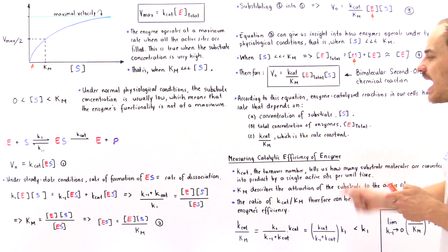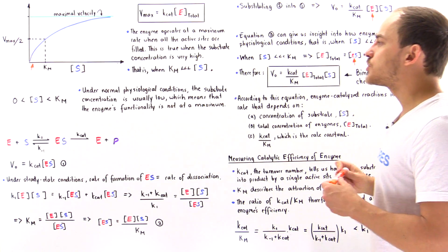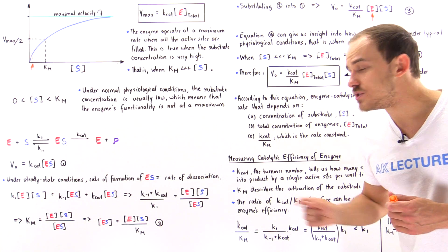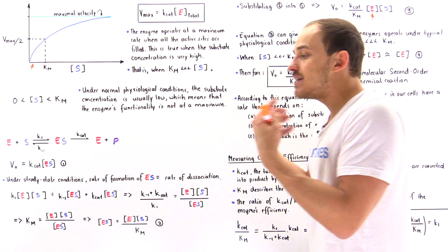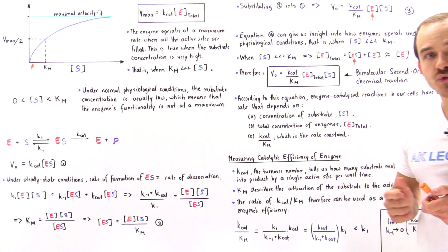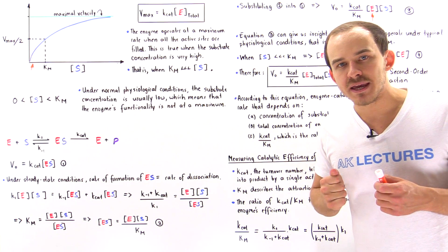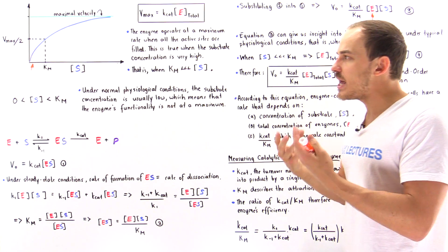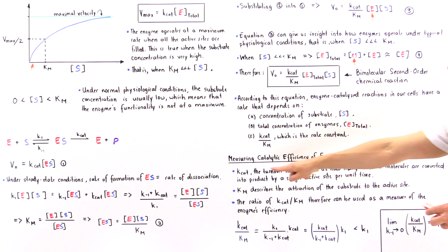Kcat divided by Km is what we use to measure the catalytic efficiency of enzymes — how efficient enzymes are in catalyzing a certain type of substrate. To understand this ratio, let's remember what Kcat and Km each mean individually, beginning with Kcat.